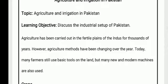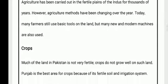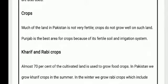Agriculture has been carried out in the fertile plains of the Indus for thousands of years. However, agricultural methods have been changing over the years. Today many farmers still use basic tools on the land, but many new and modern machines are also used. Much of the land in Pakistan is not fertile and crops don't grow well on such land. Punjab is the best area for crops because of its fertile soil and irrigation system.